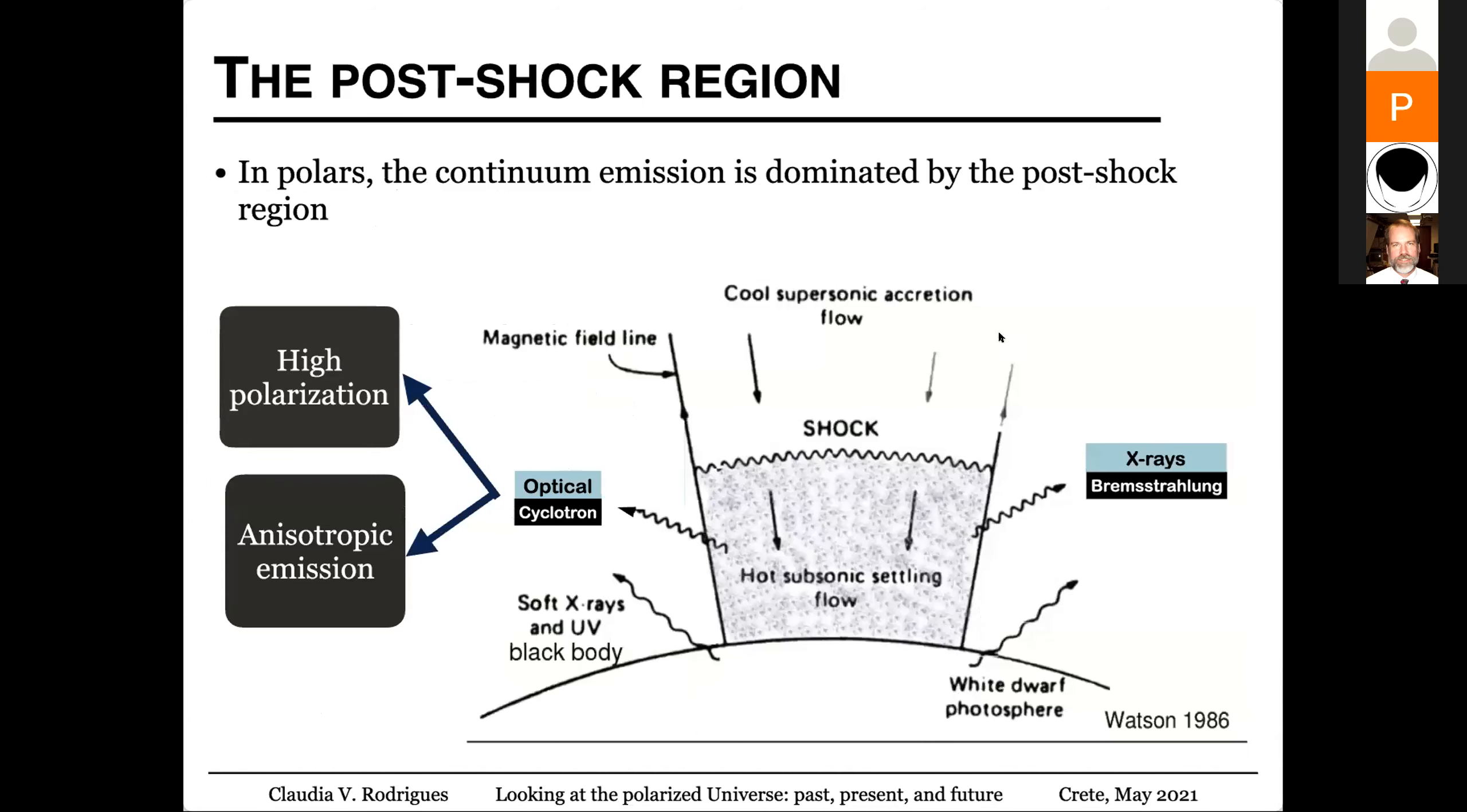So here, we have a zoom in this region. Here we have the post-shock region. In X-ray, we have bremsstrahlung emission. And in optical, and sometimes in the infrared, we have cyclotron emission, which is highly polarized and also highly anisotropic.